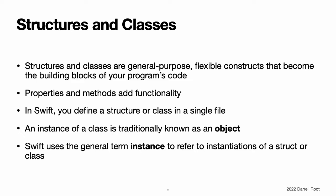Unlike other programming languages, Swift does not require you to create separate interface and implementation files for custom structures and classes. In Swift, you define a structure or class in a single file, and the external interface to that class or structure is automatically made available for other code to use.